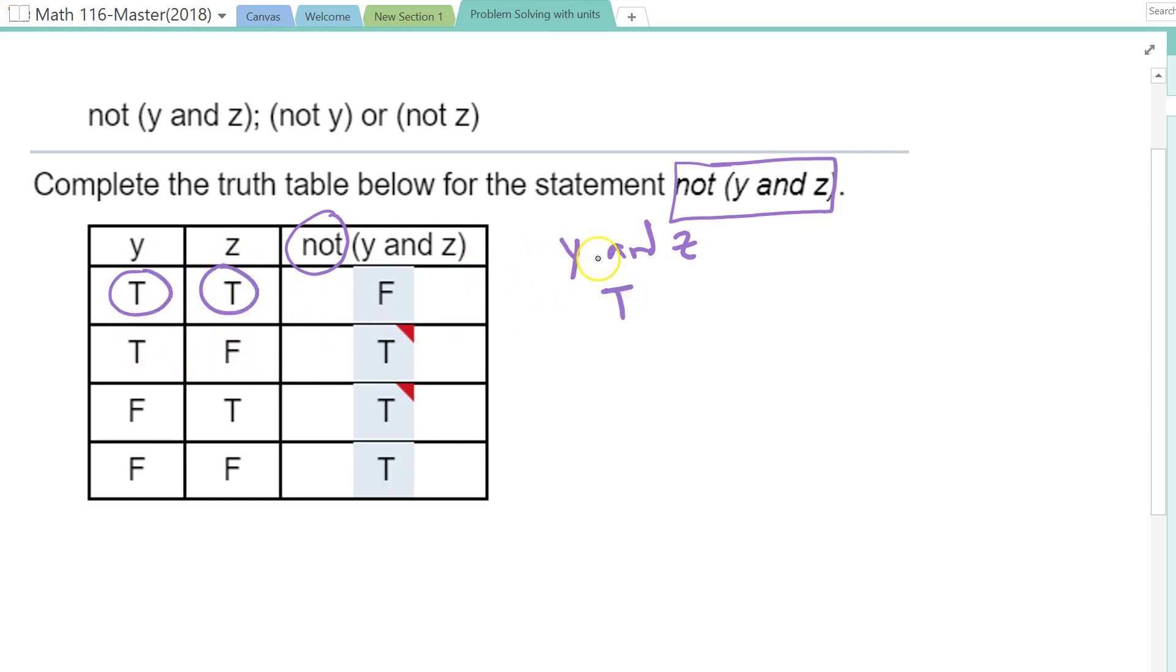And then true, false for Y and Z would be false. True and false for Y and Z, since I have a T here and an F here, would be false.